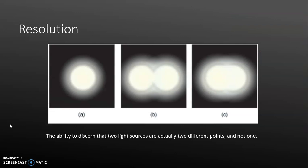Now we'll talk about resolution. Resolution is the ability to discern that two light sources are actually two different points and not one. So for example in A we have one light source, but in C you might not be able to tell that it is two separate points — for somebody standing at a distance you might not be able to tell they are separate. Here in B it is much more clear that they are in fact two different light sources. So resolution is our ability to tell that they are two different light sources.